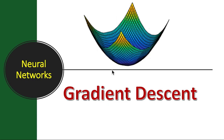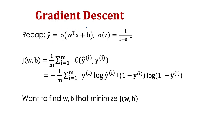So far we have seen logistic regression. We also looked at the loss function, which says how good we are doing with respect to a given training example, and the cost function, which denotes how good our parameters w and b are with respect to the training set. Our calculated estimate of y is the sigmoid function of w-transpose x plus b. The cost function is the sum of all loss functions over all training samples from 1 to m — we individually calculate y-hat and y-actual, add them, and take the average.